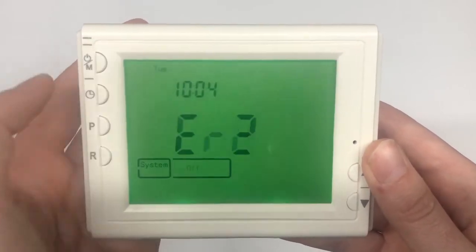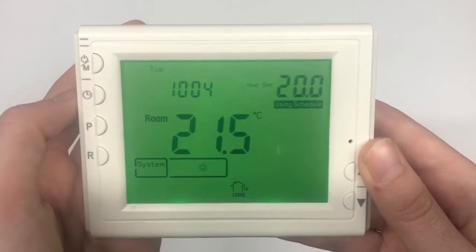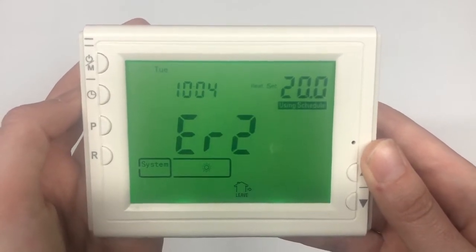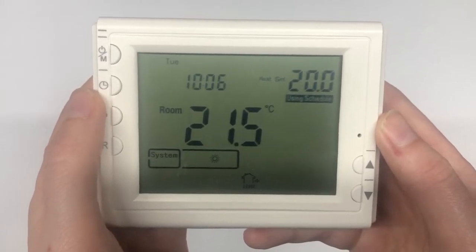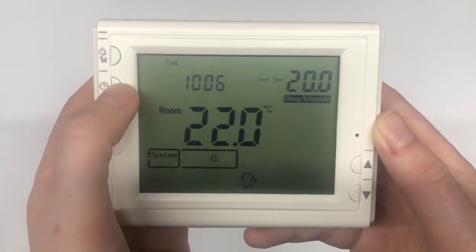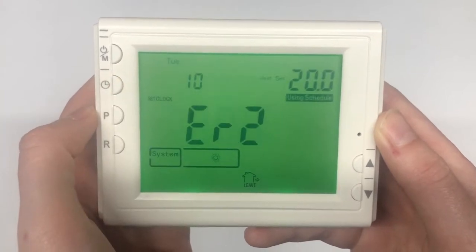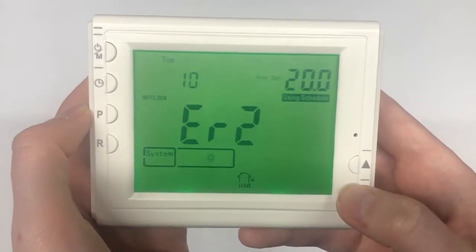To turn it on, just click the on button and this display will appear. To set the correct time on your controller, click this symbol here. Now you're in set clock mode, so you can use the arrows to select the correct time.